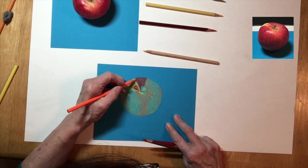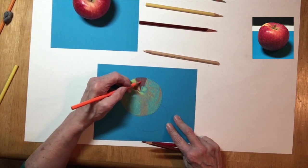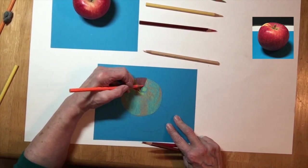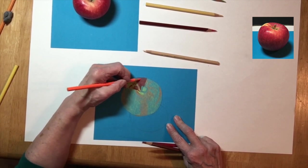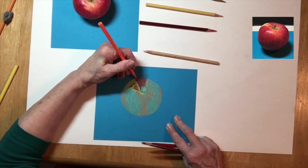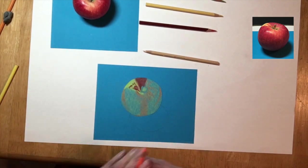As you see, I have created a hard edge between the yellow and the red, and I'm using the orange to burnish over that and make that edge between the yellow and red a little less harsh.